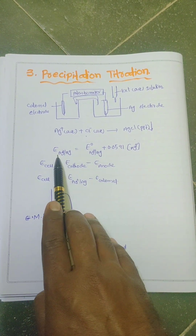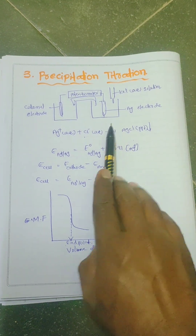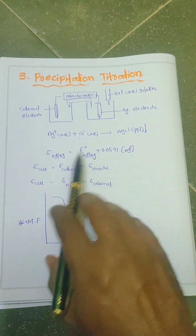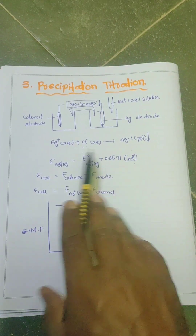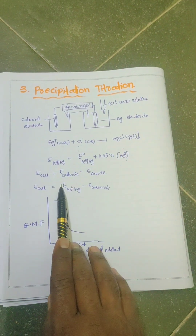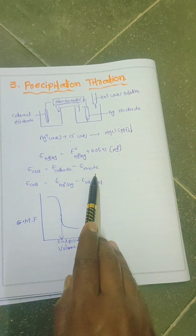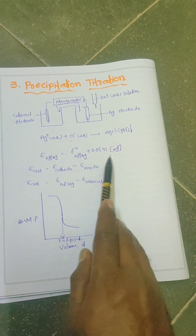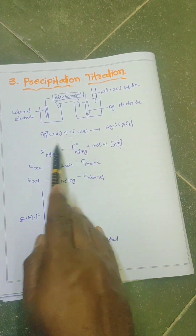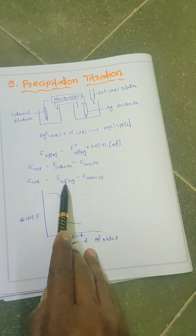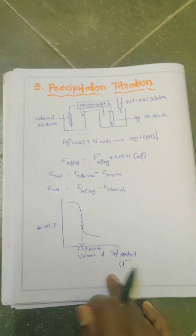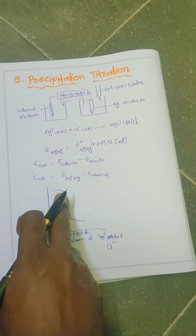The EMF of the silver electrode depends on the concentration of Ag⁺ ions. As we go on adding chloride ions, the concentration of Ag⁺ ions decreases, so the EMF of the silver electrode decreases. The overall cell EMF is: E cell = E cathode − E anode, where the silver electrode acts as the cathode and the calomel electrode acts as the anode. As we go on adding chloride ions, the EMF of the overall cell goes on decreasing.